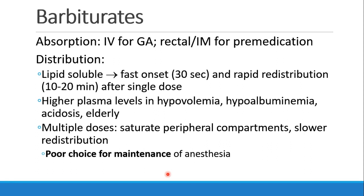Barbiturates are routinely given IV for general anesthesia. They can be given rectally or intramuscularly for pre-medication as well, and some barbiturates are available orally. They are lipid-soluble drugs and follow the same distribution and redistribution seen earlier, with a fast onset of under a minute and rapid redistribution after about 10 to 20 minutes after a single dose. You may see higher plasma levels in patients who are hypovolemic, hypoalbuminemic, have acidosis, or in elderly patients.